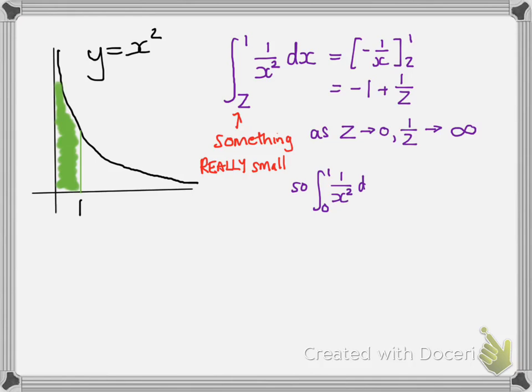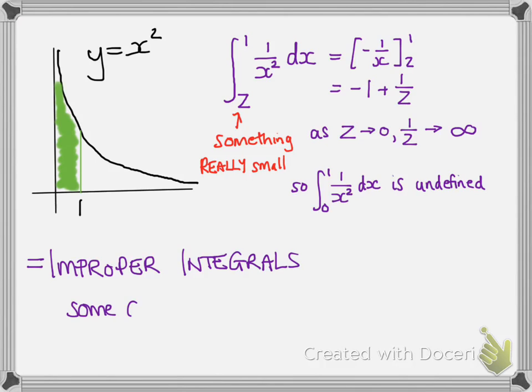So as z gets closer to 0, 1/z tends towards infinity, which means that our integral is undefined. So both of these are types of improper integrals. Some of them can be solved as we saw on the previous slide, but some of them can't.